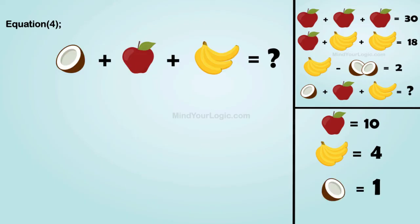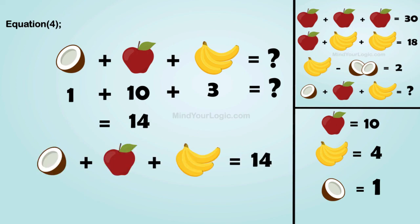Now, decoding the final equation 4: coconut plus apple plus banana equals question mark. Substituting the values, and banana equals 3, as it is 3 bananas together. We get the value of the final equation as 14.